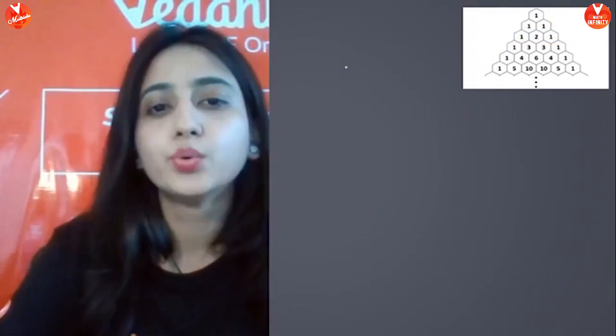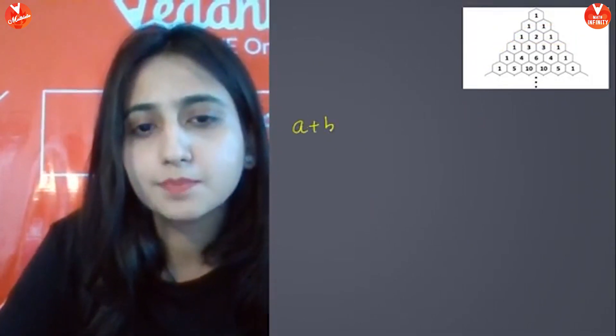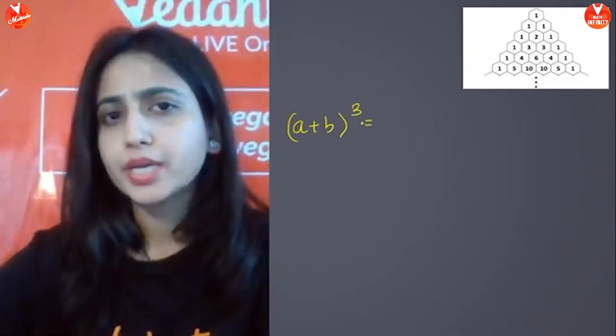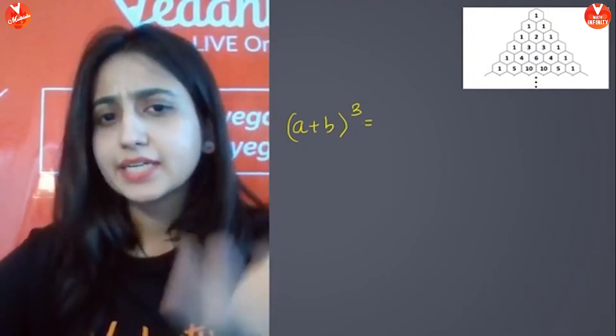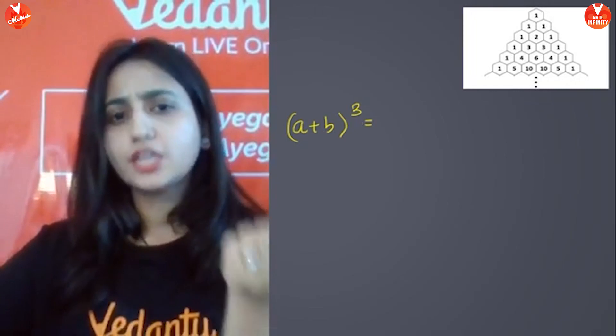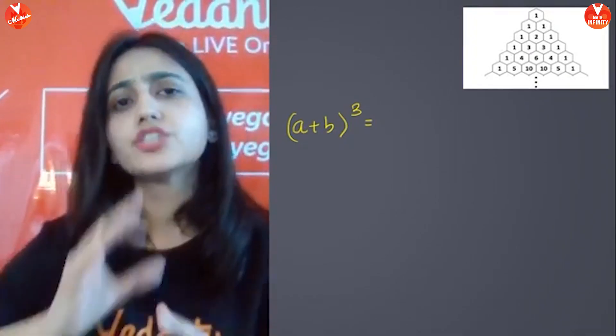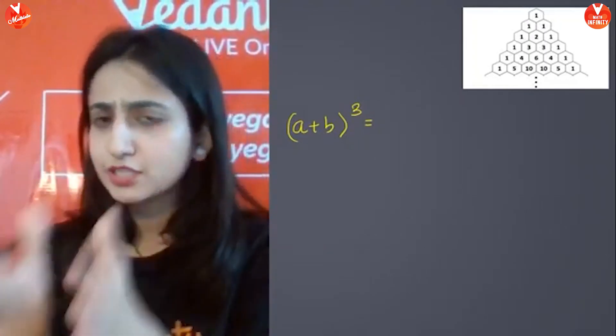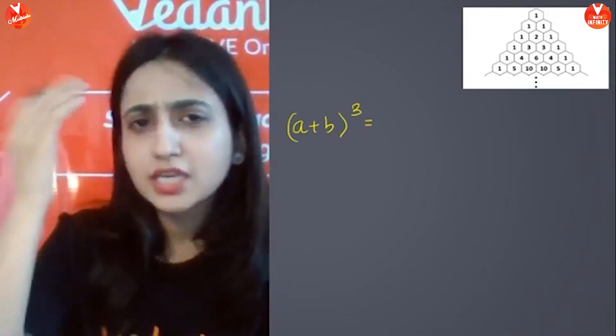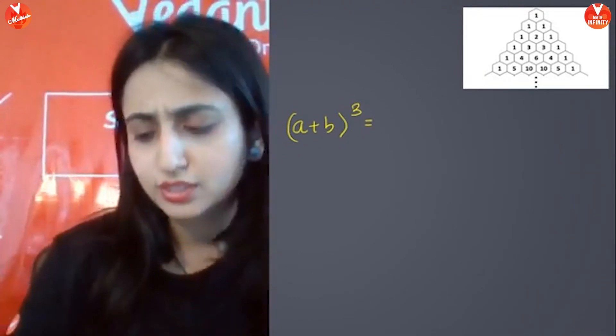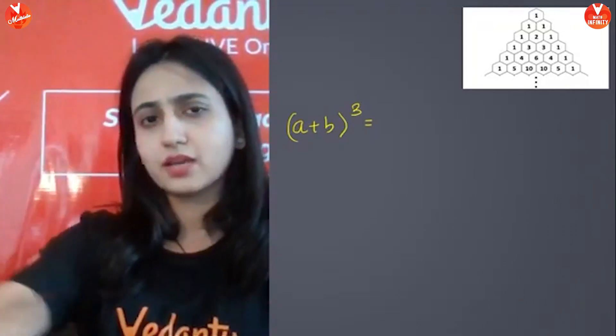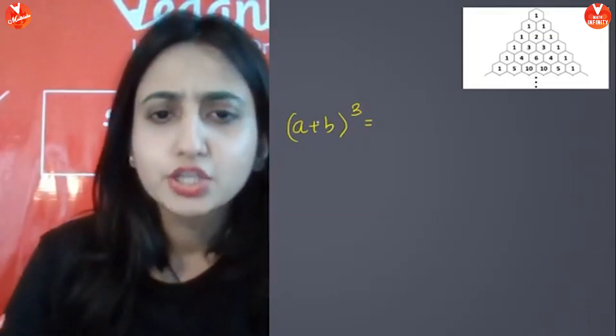And becomes the identity for a minus b whole square. Easy? You just have to change the signs like plus minus plus minus. Doesn't matter how many terms, just alternative signs put kar do. Clear? Let's now try to prove the identity number 3 basically which is a plus b whole cube. You know, it is very easy to remember a plus b whole square and a minus b whole square. These are the identities, the ones in the cubes like a cube plus b cube or a plus b whole cube in which the students get confused. So, if there is confusion here, you can use this Pascal triangle.